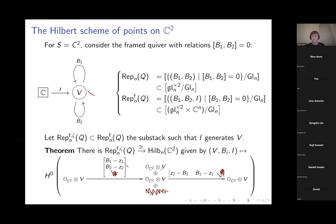In the simplest case when all the B's are zero, we find a direct sum of the structure sheaf of a point, V-many times. Turning on the matrices introduces extra differentials: for a one-dimensional case, setting B₁ or B₂ to specified numbers shifts from the Koszul resolution of the origin to the resolution of the structure sheaf of another point. More general B's with off-diagonal terms give the Koszul resolution of extensions.